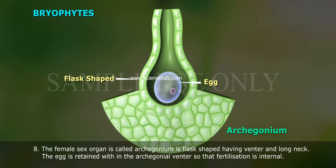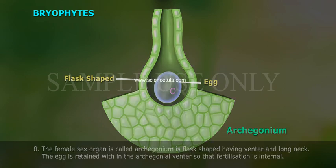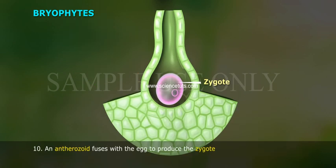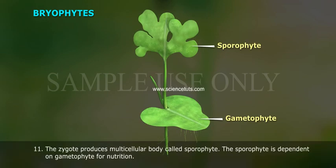The egg is retained within the archegonial venter so that fertilization is internal. 9. Presence of water is necessary for fertilization and the release of sex organs. Antherozoids are released into water where they come in contact with the archegonium. 10. An antherozoid fuses with the egg to produce the zygote. The zygote produces a multicellular body called the sporophyte. The sporophyte is dependent on the gametophyte for nutrition.